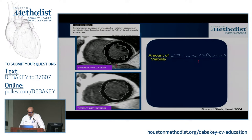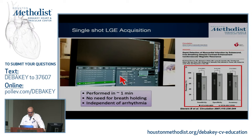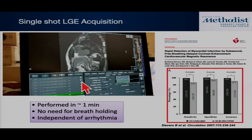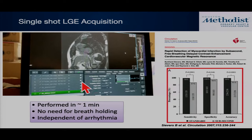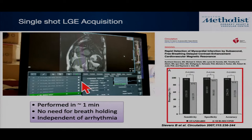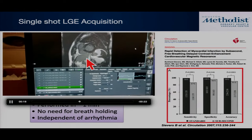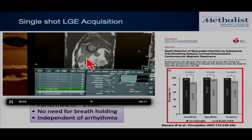If you want to do a quick assessment of viability, after giving gadolinium contrast you can run a single-shot stack of delayed enhancement images — this can be done in about one to two minutes without doing cine imaging, simply looking at the myocardial structure itself.